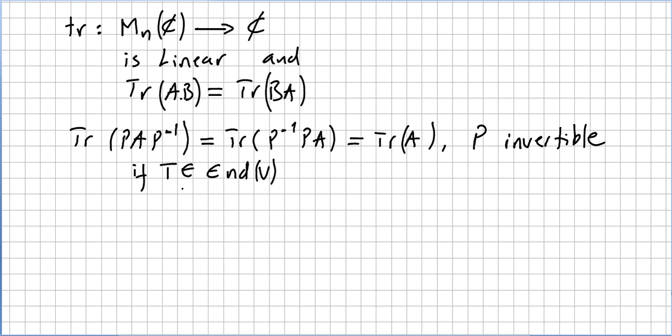If T is in the set of endomorphisms of a vector space V, then we can talk about trace of T, trace of the transformation.